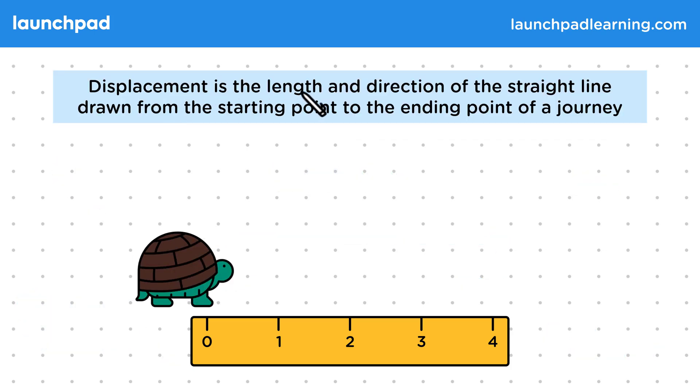Displacement is the length and direction of the straight line drawn from the starting point to the ending point of a journey. Displacement is a vector quantity.